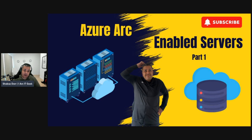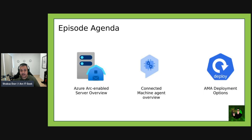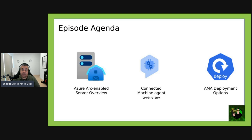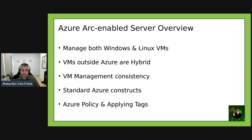We're moving through all the different services that are enabled. This is part one of the Azure Arc enabled servers — a two-parter with two videos on this topic. Today's agenda is to talk about Azure Arc enabled servers with an overview, then cover the connected machine agent overview, look at the AMA deployment agents, discuss deployment options, and we've also got a demo — creating a virtual machine within vCenter but from Azure Arc.